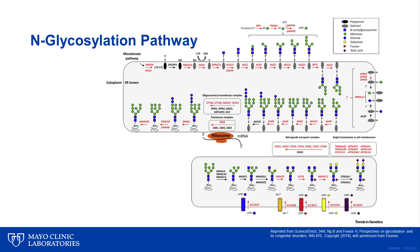These glycosylation reactions are catalyzed by glycosyl transferases. In each step along the pathway of assembly or processing, an error can occur, leading to what is termed defects in glycosylation, or the congenital disorders of glycosylation. The red gene names illustrated here indicate places along the assembly and processing line where defects have been discovered, approximately 60 to 70.